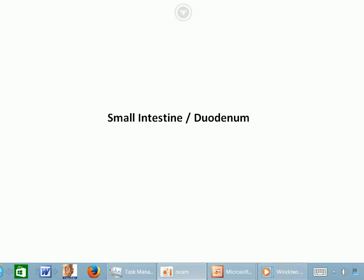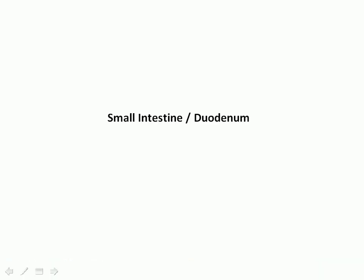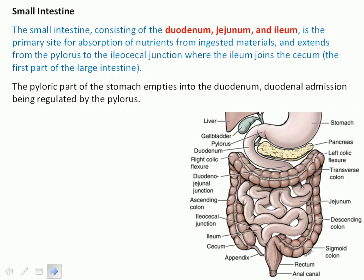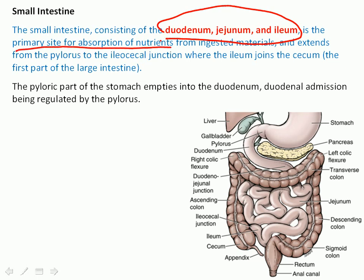Good afternoon. Let's talk about the small intestine, starting from the duodenum first, and after that we'll discuss the jejunum and ileum. The small intestine consists of the duodenum, jejunum, and ileum. The pronunciation varies between teachers; I'll use 'ileum' as it's more commonly used in the northern United States. The small intestine is the primary site for absorption of nutrients, with the jejunum playing an important role in digestion and the ileum more involved in absorption.